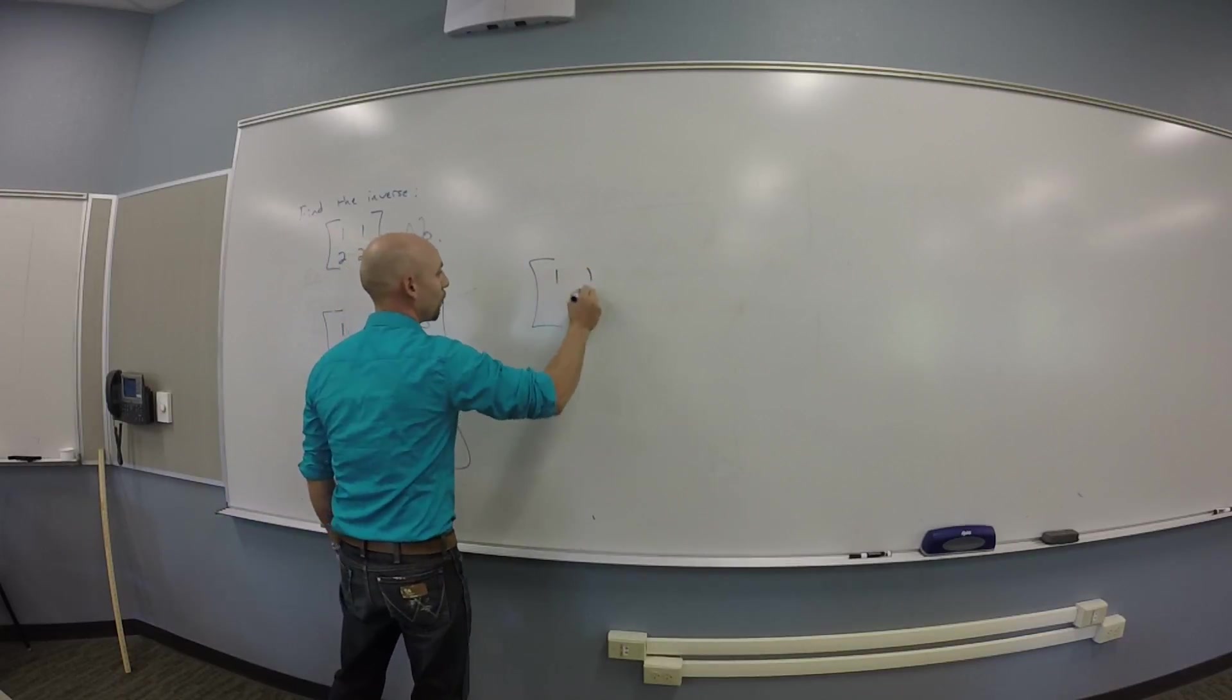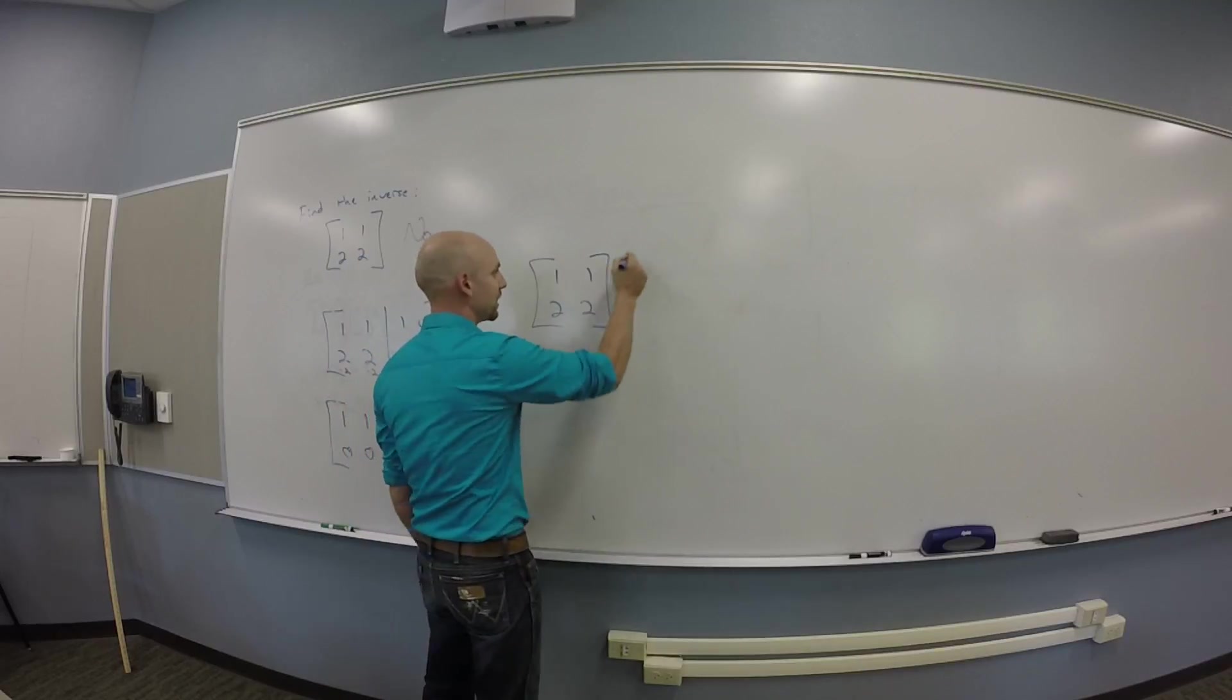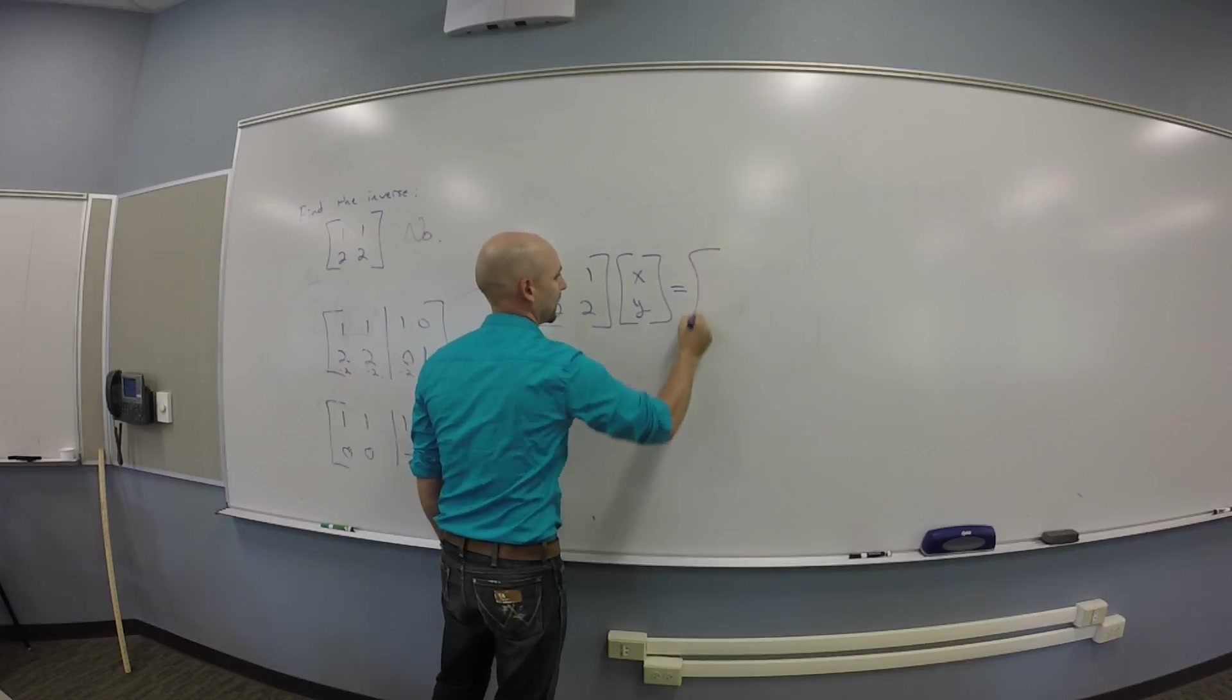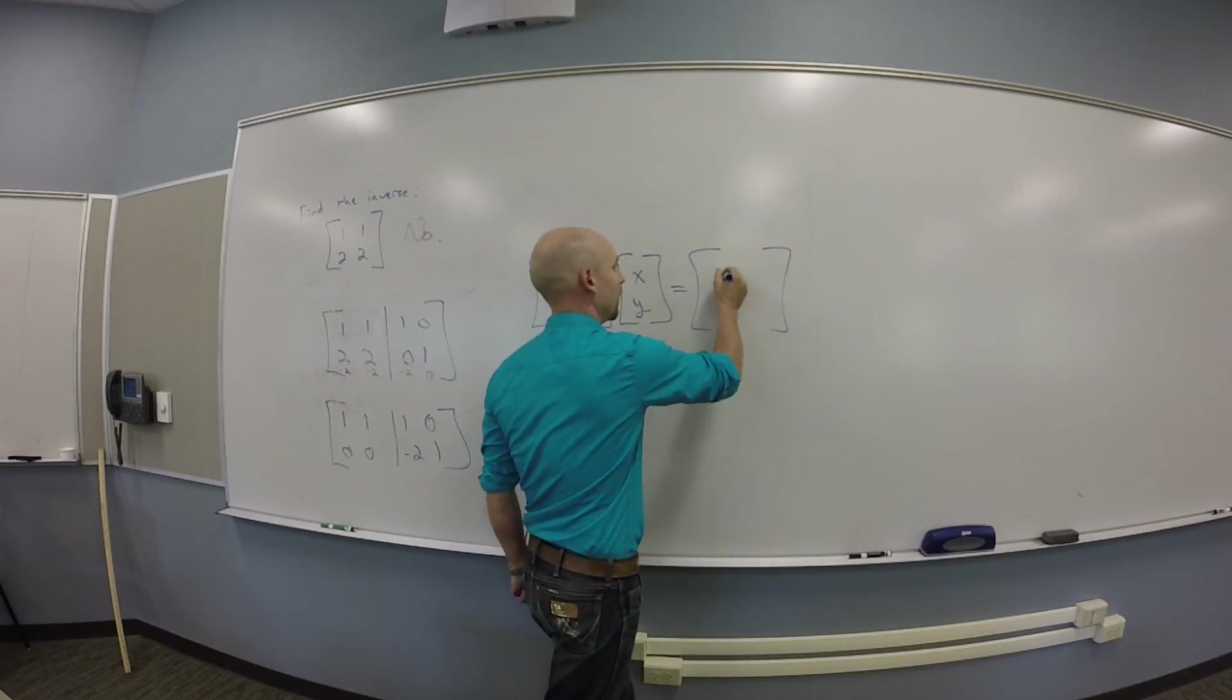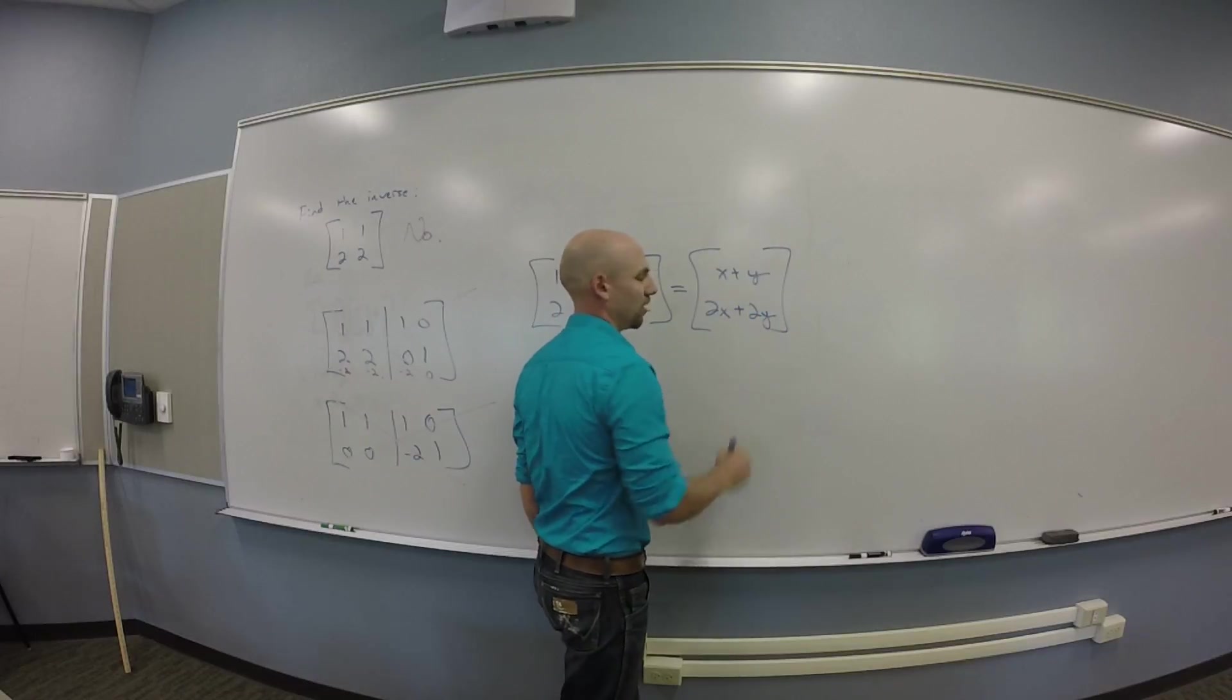So if I took my 1, 1, 2, 2 matrix, right, and I hit this against some vector x, y, what do you get? X plus y and 2x plus 2y.